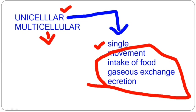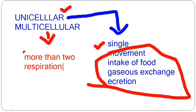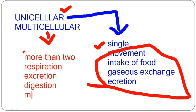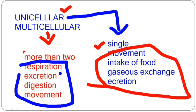In multicellular organisms, there are more than two cells. When there are so many cells, each performs a different function — respiration, excretion, digestion, and movement. We will have different cells for respiration, excretion, digestion, and movement.